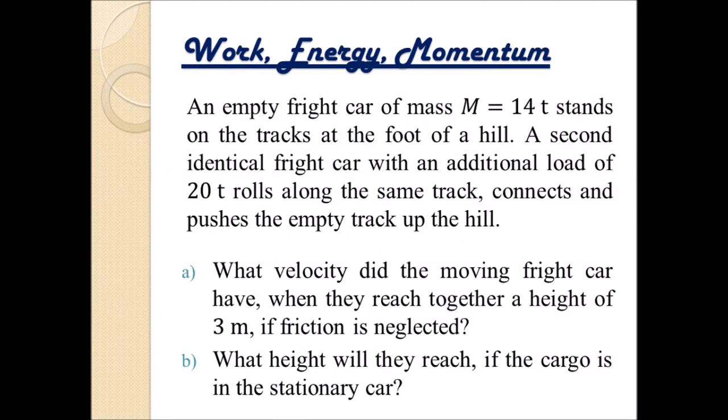An empty freight car of mass M equals 14 tons stands on the track at the foot of a hill. A second identical freight car with an additional load of 20 tons rolls along the same track, connects and pushes the empty track up the hill. Question A: what velocity did the moving freight car have when they reach together a height of 3 meters if friction is neglected? And B: what height will they reach if the cargo is in the stationary car?